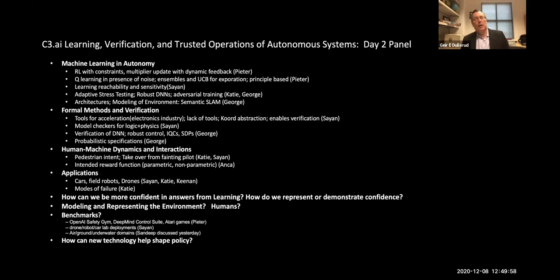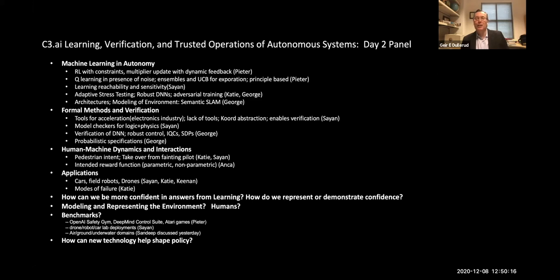He also talked about model checkers and hybrid systems — logic plus physics type systems — and when you can decouple those. George talked about verification of deep neural nets using robust control, using IQCs and SDPs to get guarantees. He also discussed the need for probabilistic specifications, suggesting that hard non-deterministic specifications might be too much in certain cases.